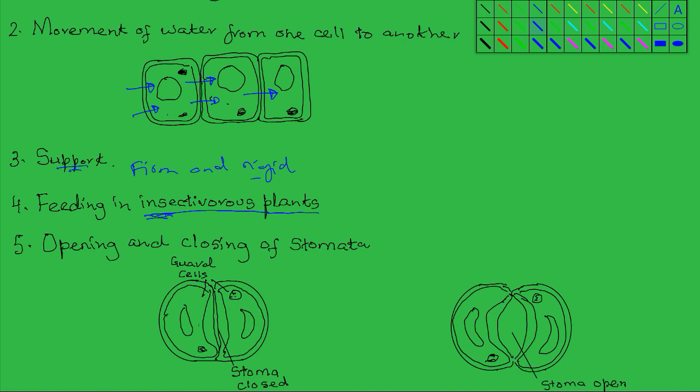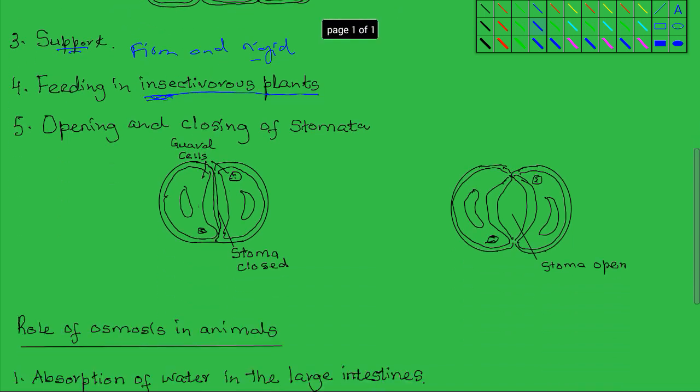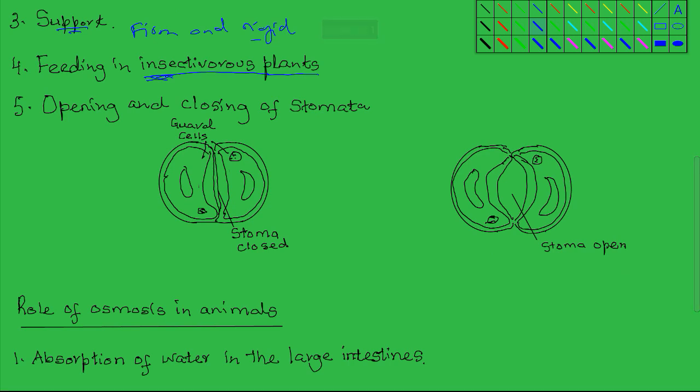Another role of osmosis is in the opening and closing of stomata. When water moves into the guard cells by osmosis, the guard cells become turgid.